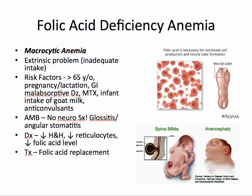Folic acid deficiency anemia is a macrocytic anemia that is an extrinsic problem due to inadequate intake. Not only is folic acid necessary for red blood cell production, but it's also important in neural tube formation. Folic acid deficiency during pregnancy may result in spina bifida and anencephaly. Risk factors include age greater than 65, pregnancy or lactation, GI malabsorptive disease, methotrexate, infant intake of goat milk, or anticonvulsants.